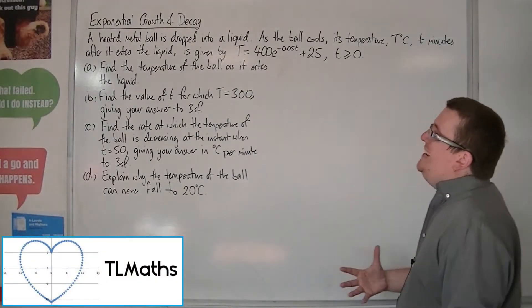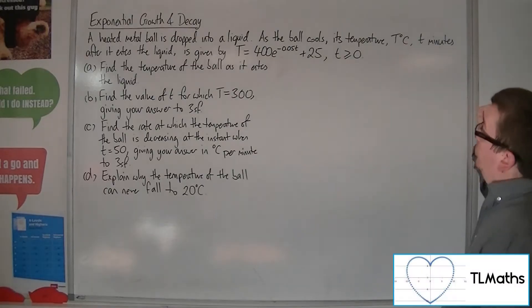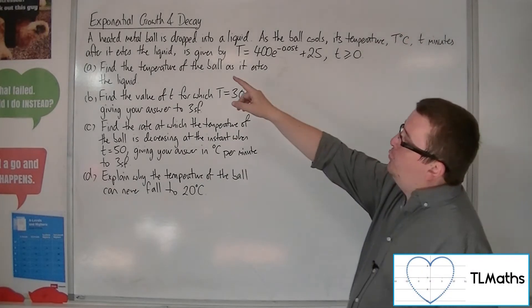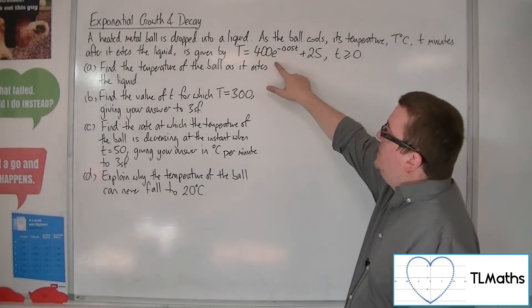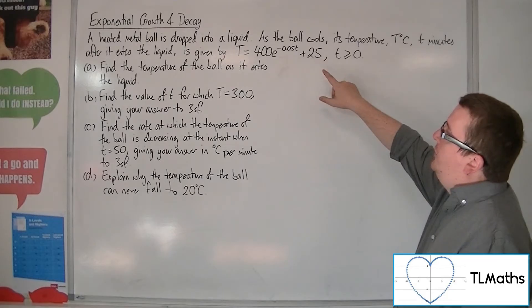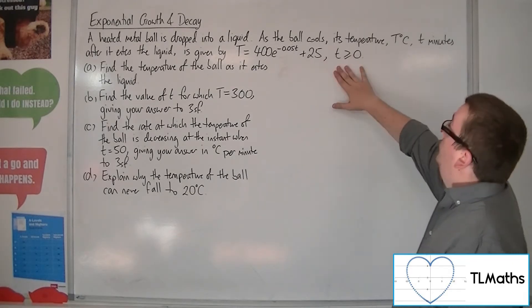In this problem, a heated metal ball is dropped into a liquid. As the ball cools, its temperature T degrees centigrade, T minutes after it enters the liquid, is given by T equals 400E to the minus 0.05T plus 25, where T is greater than or equal to 0, as it's representing time.